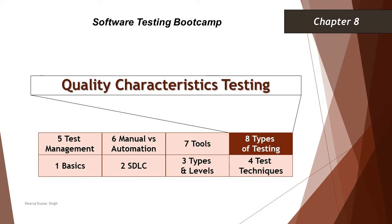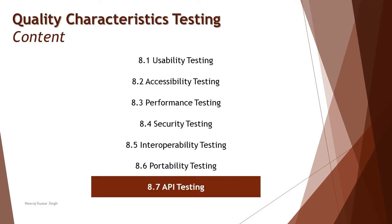Hello friends, greetings for the day. Welcome back to another tutorial on our software testing boot camp where we are talking about the fundamental concepts of software testing. We are in chapter 8, talking about quality characteristics testing, and we are moving to our very last topic of this chapter: 8.7 API testing. As part of this, we are also coming to the end of this entire boot camp.